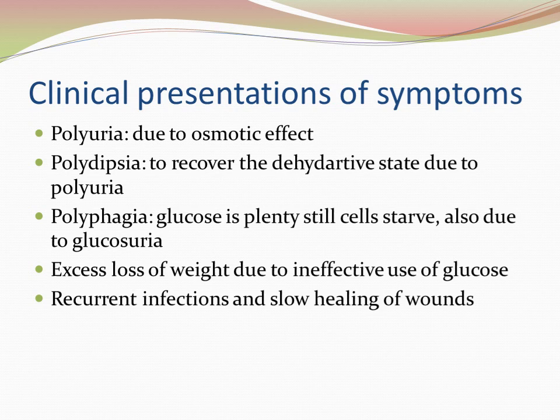Polyuria means frequent urination. Because there is hyperglycemia, the kidneys try to excrete the glucose — the renal threshold is exceeded, causing glycosuria. Glucose is an osmotically active particle, so it pulls water from the surrounding tissues, resulting in excessive diuresis and frequent urination. Polydipsia means excessive thirst — the person is losing lots of water and is in a dehydrated state, so the body signals that water intake is needed.